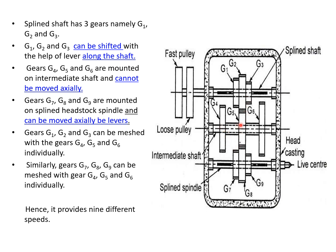Gears G4, G5, and G6 are mounted on intermediate shaft and cannot move axially. That is, these three gears are fixed. Then, gears G7, G8, and G9 are mounted on a splined spindle, headstock spindle, and can be moved axially by levers.